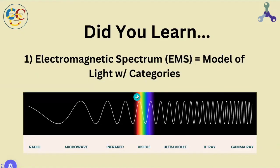So did you learn the following? One, electromagnetic spectrum, or EMS for short, is a model for light showing the range of possible wavelengths and frequencies. It's compartmentalized into categories such as microwaves and x-rays.